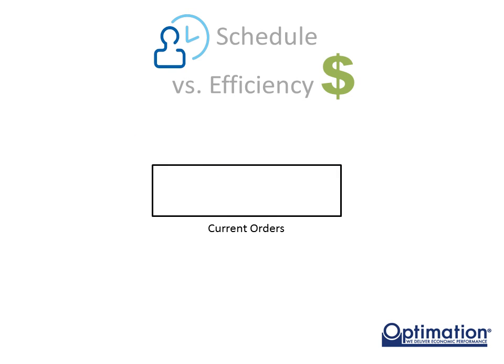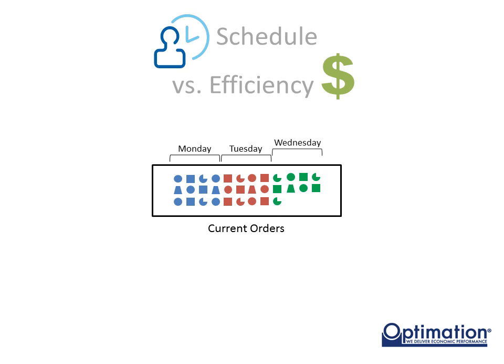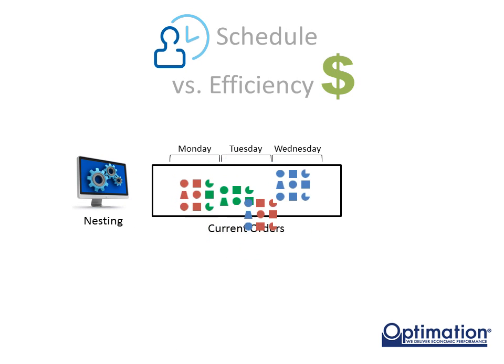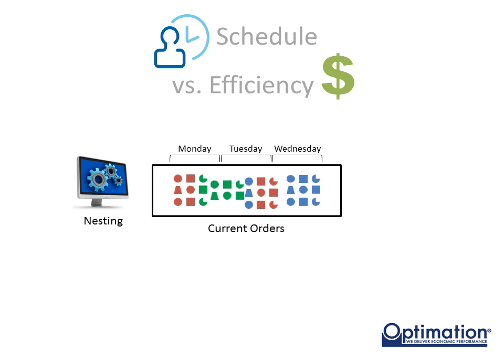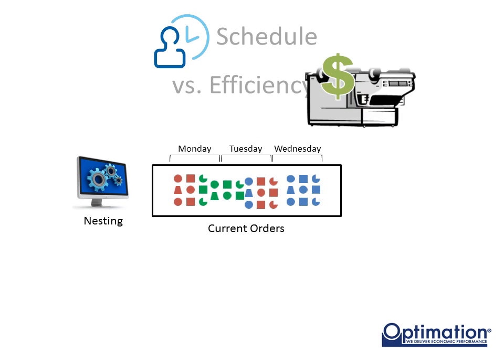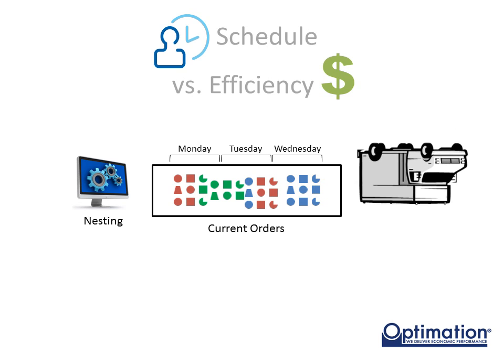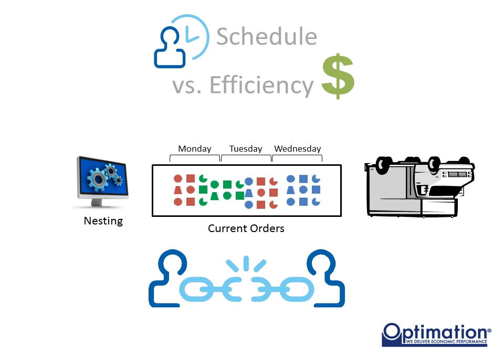While most manufacturers have a multitude of parts on order at any one time, these parts must be produced to a specific schedule. Without the proper controls, a nesting system can thoroughly disrupt a schedule in an effort to keep part quantity and, thus, material efficiency high. This can dramatically disrupt on-time delivery and harm downstream processes.